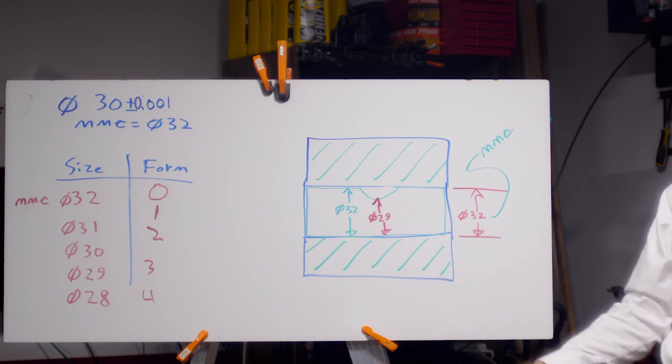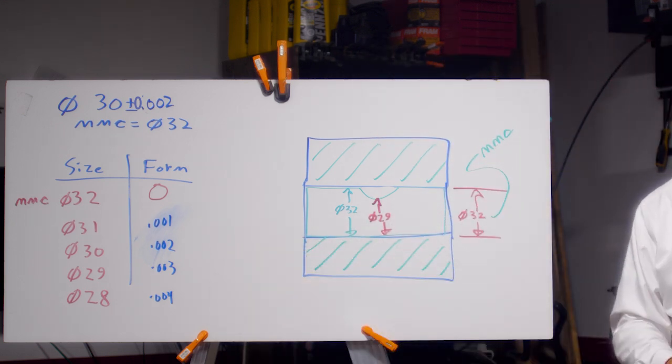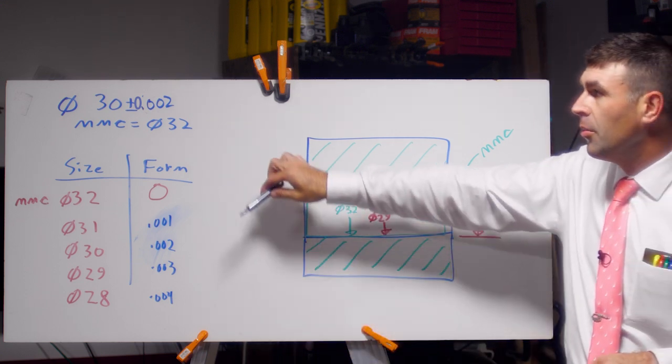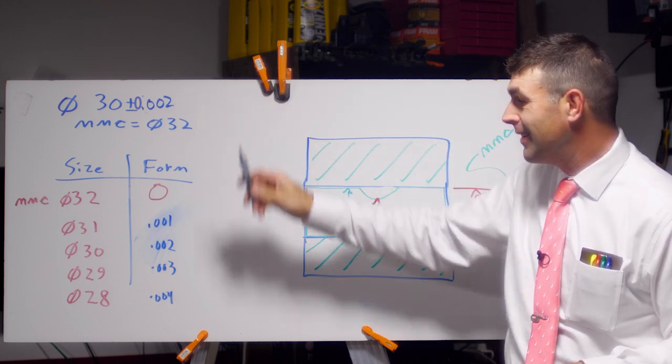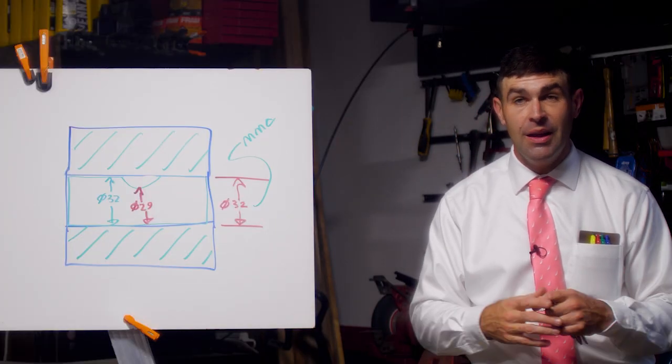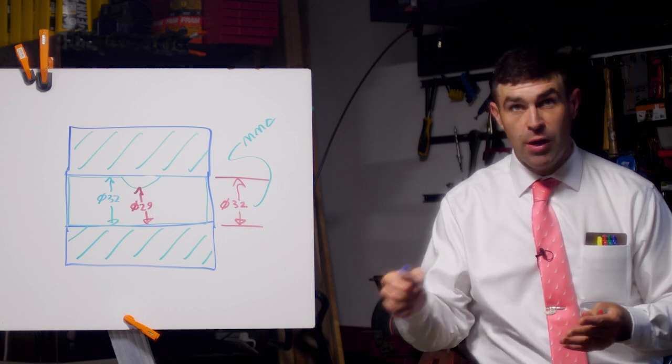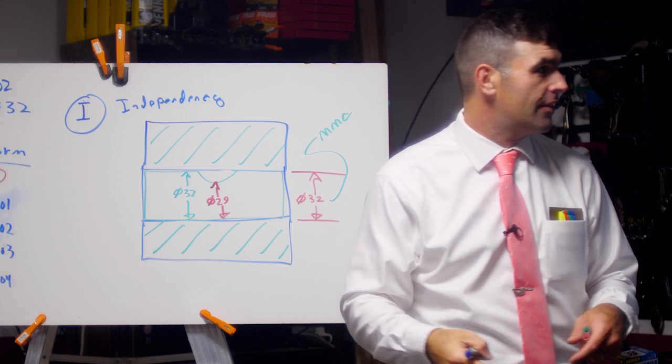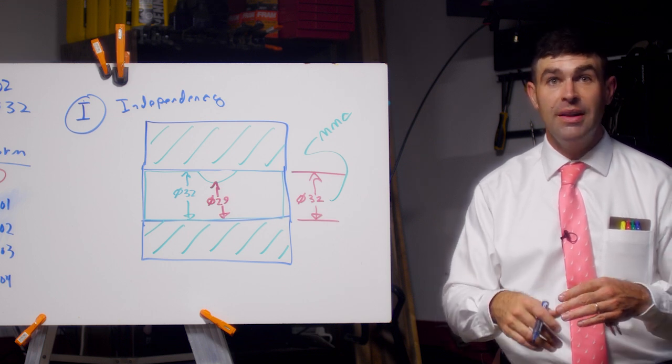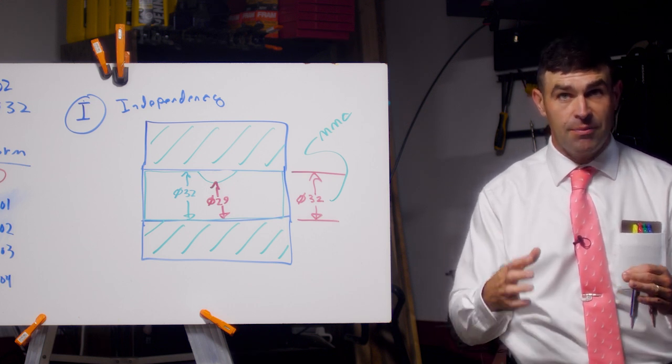And I changed it from one to two just because it fits my chart better. But this is our total size tolerance, four microns. Four microns is the maximum form we can have. So while it protects parts from being bent, it does bind that size and form together, which isn't always what you want. If you don't want rule number one to apply, you can put the independency symbol next to the dimension. And what that does is override rule number one and let you control the form separately with the straightness tolerance or cylindricity, circularity, however you want to do it.